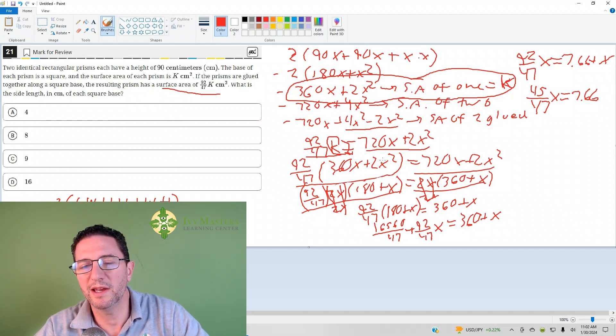And then what I did was I factored out, I looked at both sides of this equation and I said, what's in common between this 360x and the 2x squared, the 720x and the 2x squared? And 2x is common to both. If I take those out of both sides, I can divide both sides by 2x. What I'm left with is 92 over 47. And then in the parentheses, 180 plus x. And the parentheses on the other side, 360 plus x.